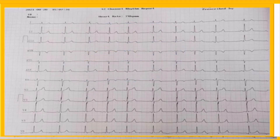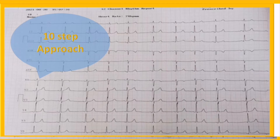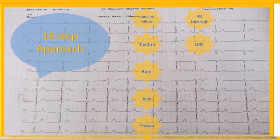Before getting down to the heart of the matter, remember that the best way to make a flawless interpretation is using a 10-step approach. This approach consists of: standard calibration values, heart rhythm, heart rate, axis, P waves, PR interval, QRS complexes, ST segment and T waves (also known as STT changes), QT interval, and finally overall interpretation.